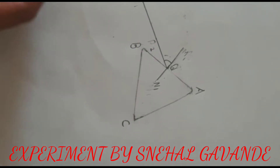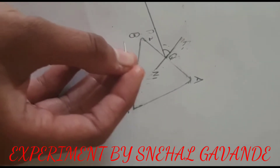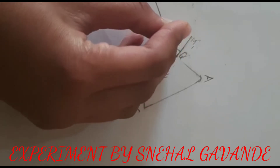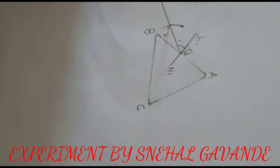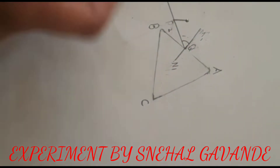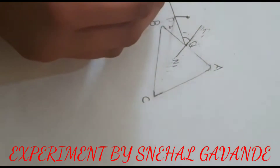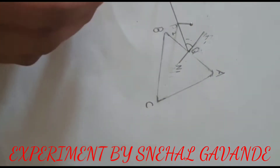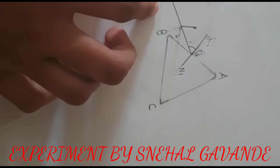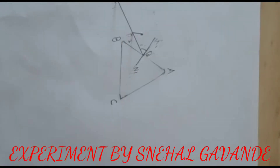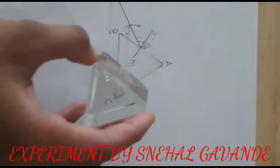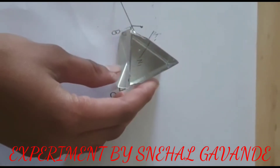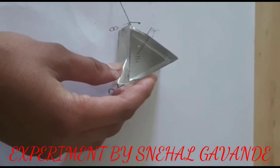Now fix two pins P1 and P2 on the incident ray PQ such that the pins are well separated. Now replace the glass prism properly in its original position.